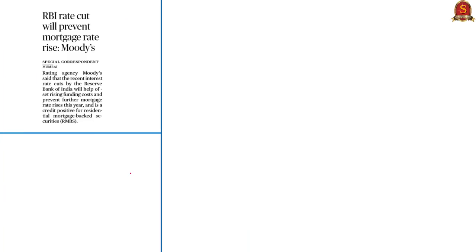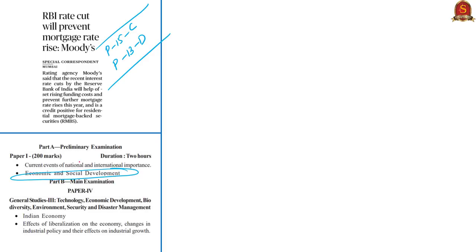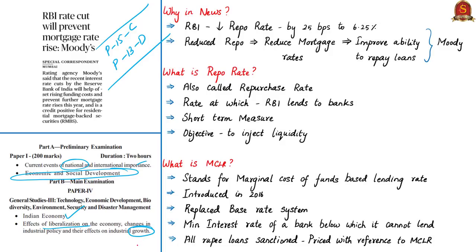The next article appears on page number 15 in Chennai and page number 13 in Delhi edition. The information is relevant under economic and social development, current events of national and international importance in the preliminary examination syllabus, and Indian economy and effects of liberalization, changes in industrial policy and their effects on industrial growth in GS Paper 3. RBI reduced the repo rate by 25 basis points in February and recently in April. The repo rate is now 6.25%. Rating agency Moody's noted that the recent interest rate cuts by the Reserve Bank of India will help offset rising funding costs for financial services such as loans and prevent further mortgage rate rises this year.